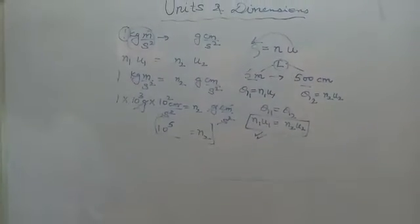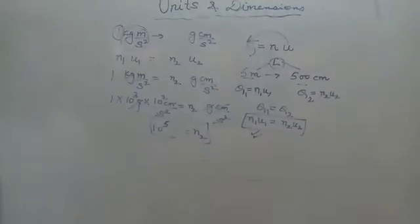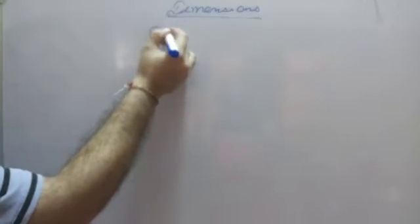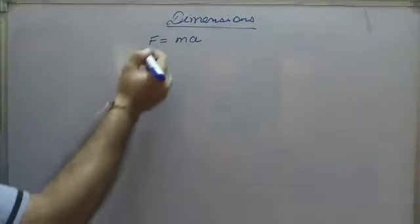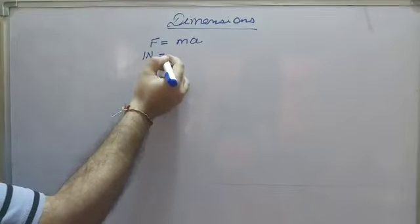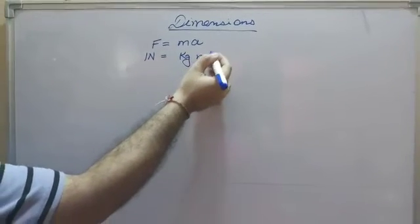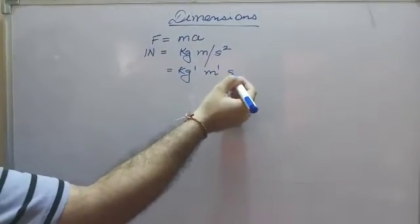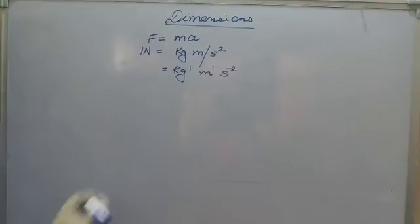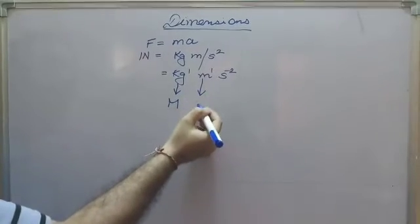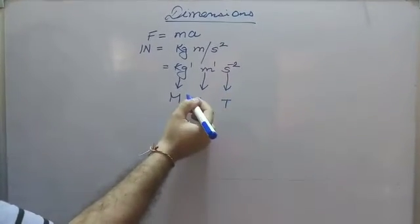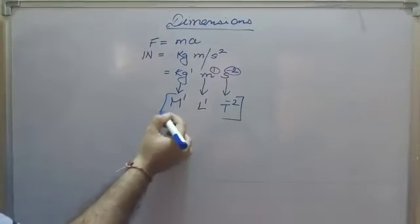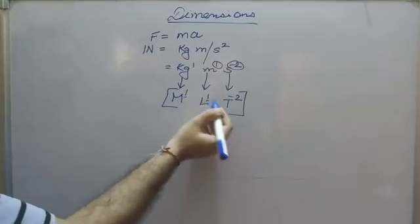Now let's understand dimensions. For force = mass × acceleration, the standard unit is newton = kg·m/s², which we write as kg¹·m¹·s⁻². Writing kg as M, meter as L, and second as T, we get M¹·L¹·T⁻². Putting this in square brackets gives us the dimensions [1, 1, −2].